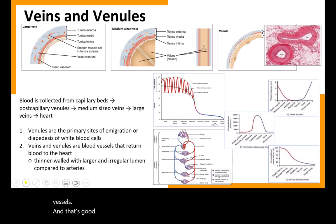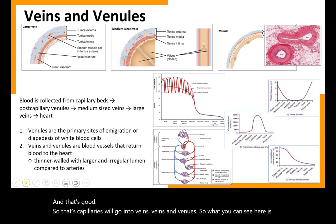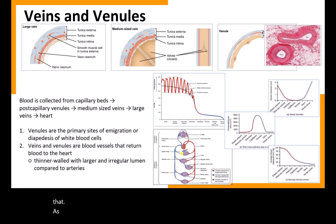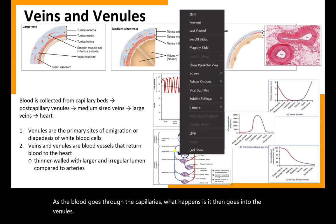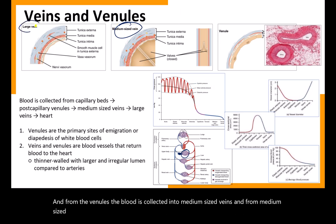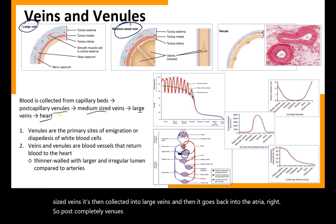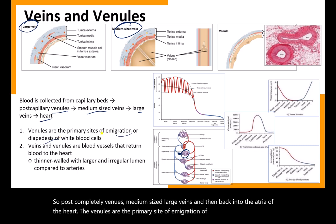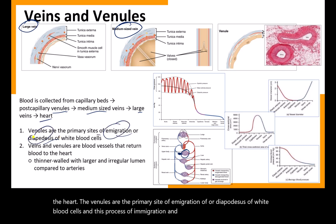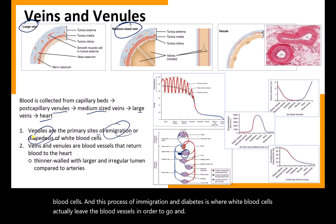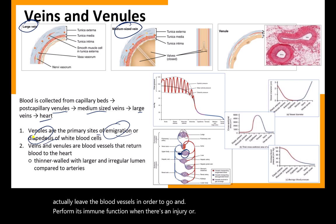From capillaries, blood goes into venules, then into medium-sized veins, large veins, and back into the atria of the heart. The venules are the primary site of emigration or diapedesis, where white blood cells leave the blood vessels to perform immune functions in response to injury or pathogen infestation.